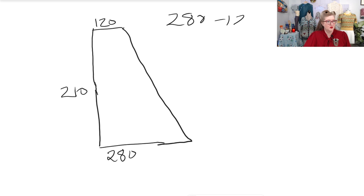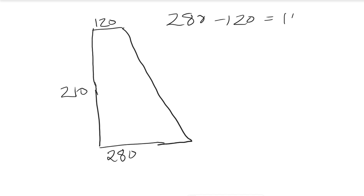First we need to take 280 minus 120, which is 160 — that's our change in stitch count. For a sleeve we work two increases or decreases per row, so we need to divide that in half. 160 divided by 2 is 80.